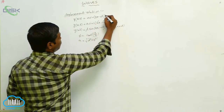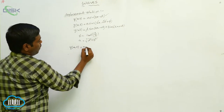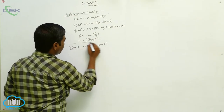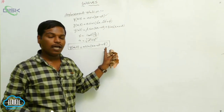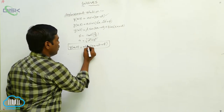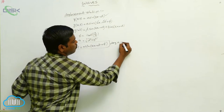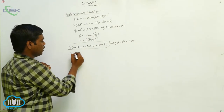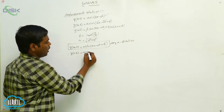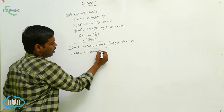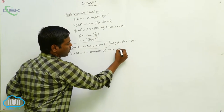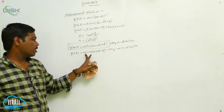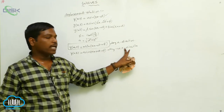In this displacement relation y(x, t) = a sin(kx − ωt + φ), the wave is moving along the positive x direction. If this wave is moving along the negative x direction, then the displacement relation becomes y(x, t) = a sin(kx + ωt + φ). This is for the wave moving along the negative x direction.